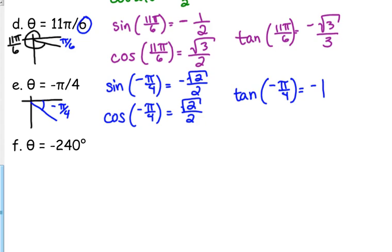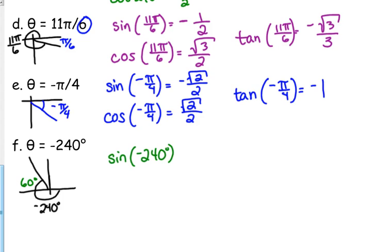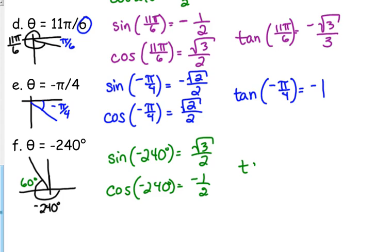We have 10 minutes left in class, so let's finish this example. Negative 240 degrees — what quadrant are we in? Second. Very good, negative 240 is in the second quadrant. What's its reference angle? 60. Very good. So the sine of negative 240 is square root of 3 over 2. The cosine of negative 240 is negative 1 half. And the tangent of negative 240 would be negative square root of 3.